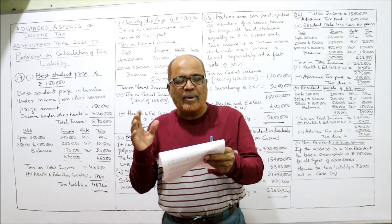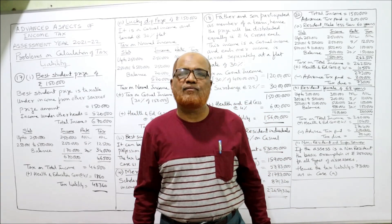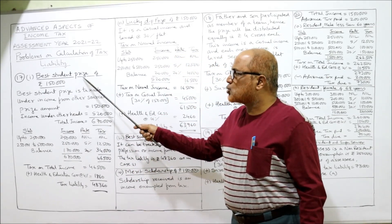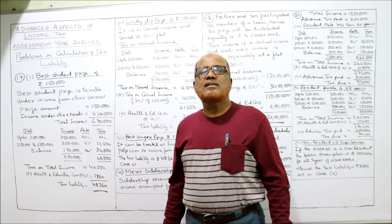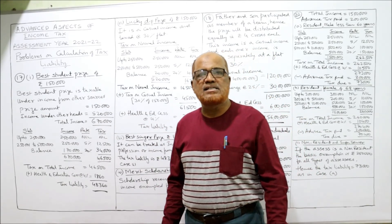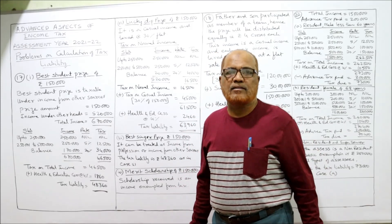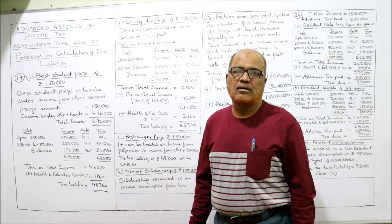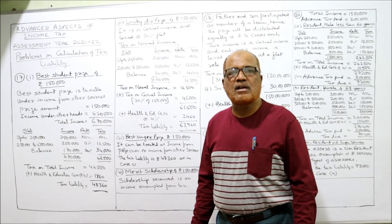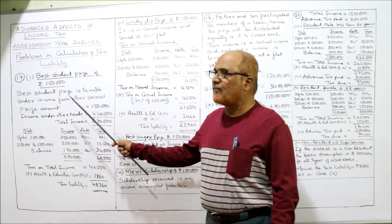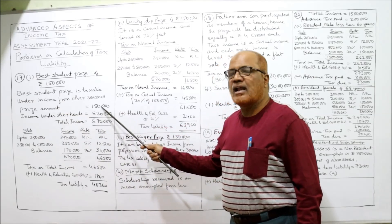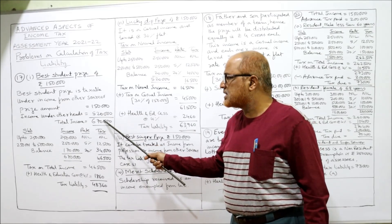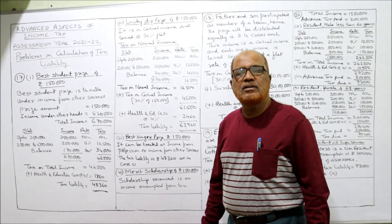The first situation: best student cash prize of one lakh fifty thousand. The Income Tax Act says if an assessee has received the best student prize, it will be taxable under the head 'Income from Other Sources.' The prize amount is one lakh fifty thousand, and income under other heads is five lakh twenty thousand, so total income will be six lakh seventy thousand.